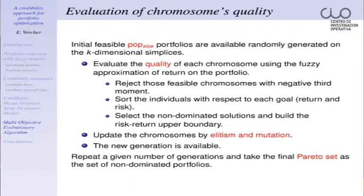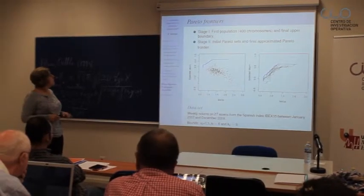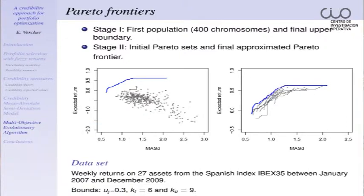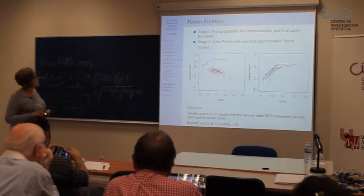We repeat this procedure for 100 generations. Stages 1 and 2 of this procedure are nicely illustrated here. We are working with weekly returns on 27 assets from the Spanish IBEX 35 from January onwards. The upper bounds are 0.3, and we work with portfolios of between 6 and 9 assets. We have 100 chromosomes per simplex, covering the 7, 8, and 9 asset simplexes. This is the representation of expected return versus risk — the mean absolute semi-deviation — for the initial population.